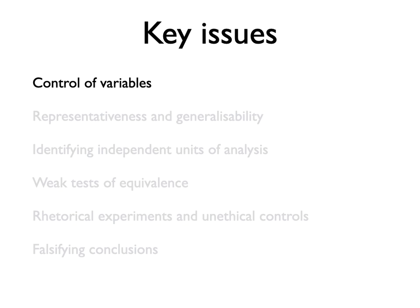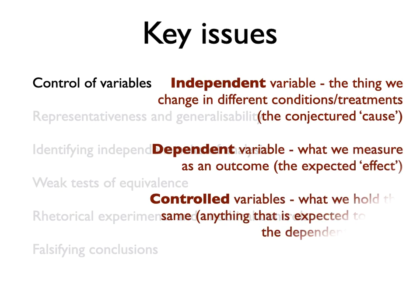A good experiment involves three classes of variable: the thing we are deliberately changing, the thing we allow to vary to see if and how it changes, and everything else which could have an effect and so is not allowed to change. To do an experiment could be seen as in large part controlling all the other things that could affect our results and confuse the possible dependency of the dependent variable upon our planned intervention.